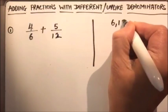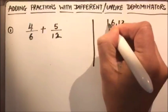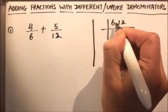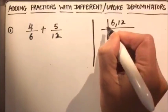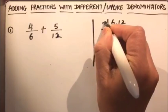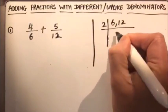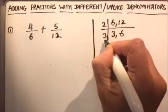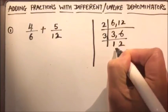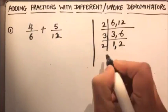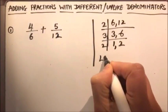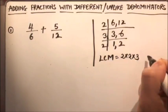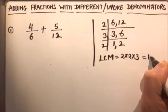First of all, we'll take the LCM of the denominators. To find the LCM, you can check out my other video. Here we'll do it quickly: two times three, two times six, and three times one — and two and two. So the LCM is two times two times three, which is equal to twelve.